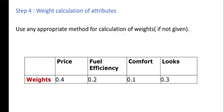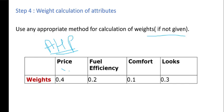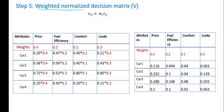Weight calculation of attributes: if weights are given then there is no need for this step. If weights are not provided, we use any appropriate method such as AHP (Analytic Hierarchy Process), which I have already discussed in my previous lectures. For now, I am considering the weights: price 0.4, fuel efficiency 0.2, comfort 0.1, and looks 0.3.